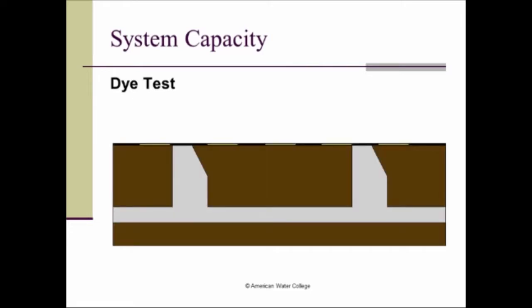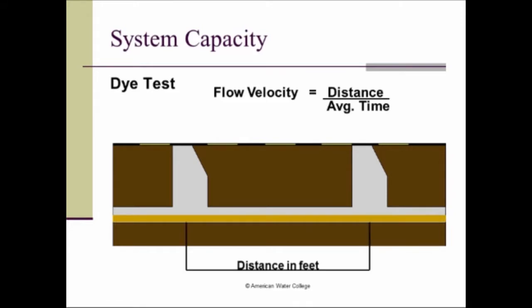So by way of demonstration for the dye test, here we have a system, we've got the street, we've got two manholes, and then we've got the pipe connecting the two. So if we start our flow in the system, and then we take our dye and drop it in, it's going to disperse and create some length, and then it will move through. And as it passes that second manhole, that's when the person at that manhole will record both the first sighting and the last sighting, take that average time. And then you divide the distance between the manholes by the average time. And that will give you your flow velocity in feet per second.